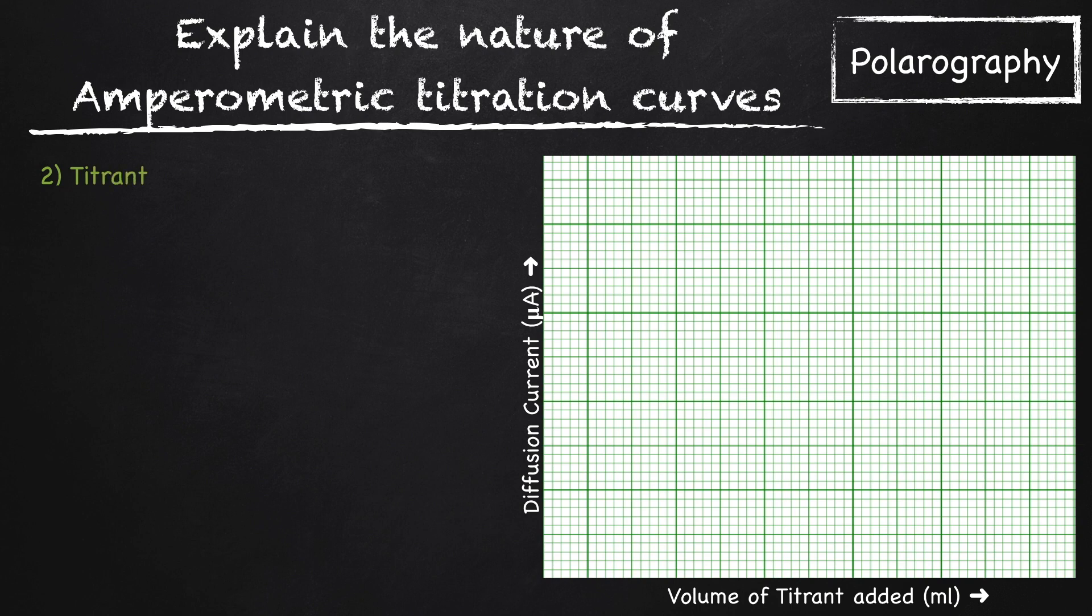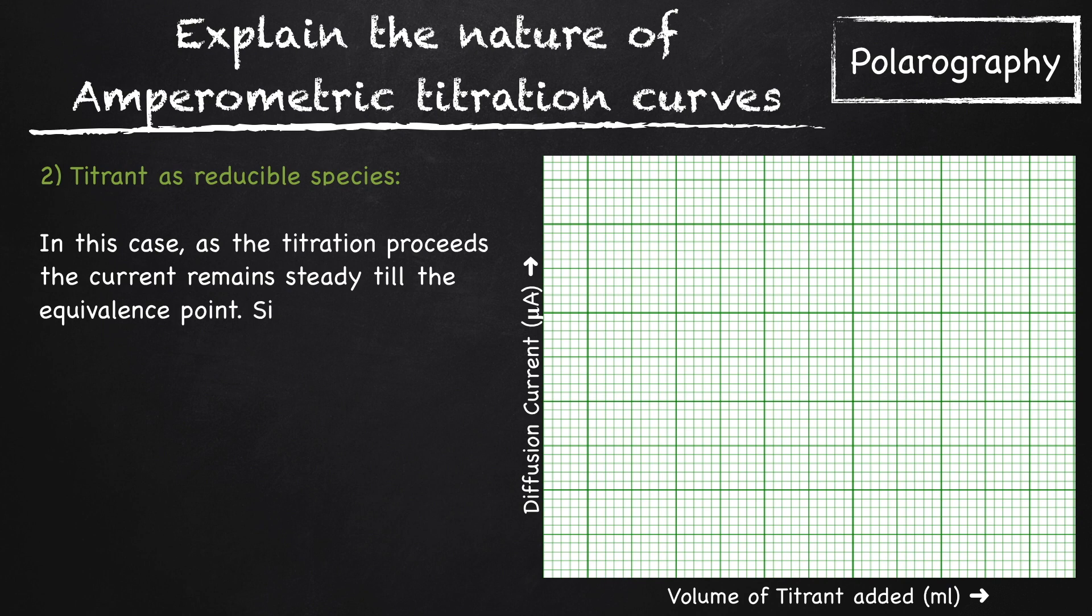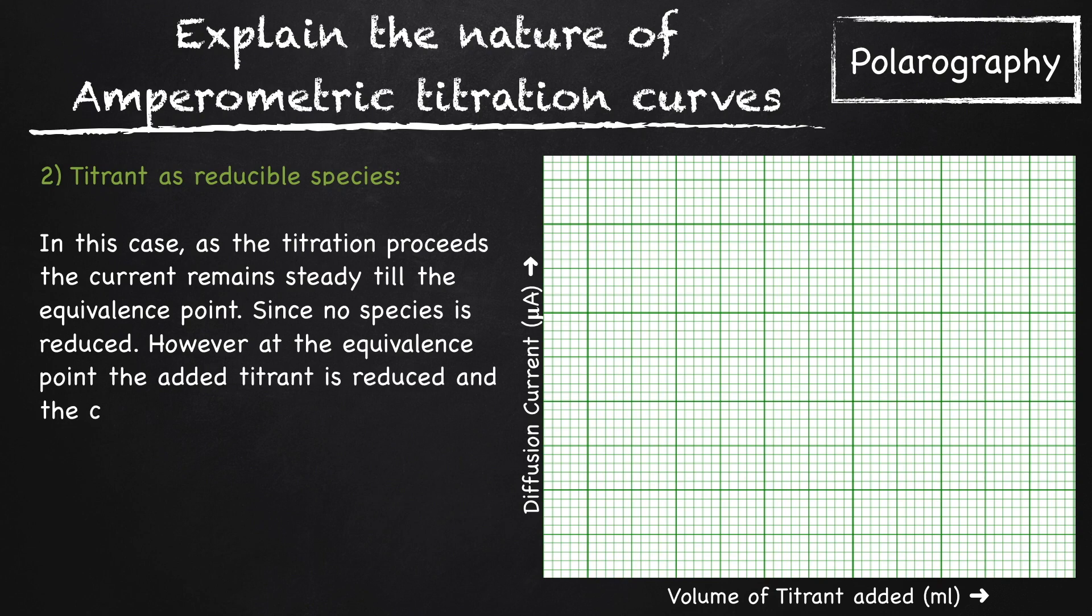Second case, titrant is reducible species. In this case, as the titration proceeds, the current remains steady till the equivalence point. Since no species is reduced, however, at the equivalence point, the added titrant is reduced and the current steadily increases.